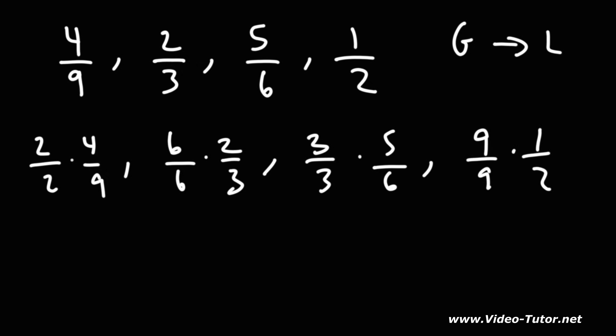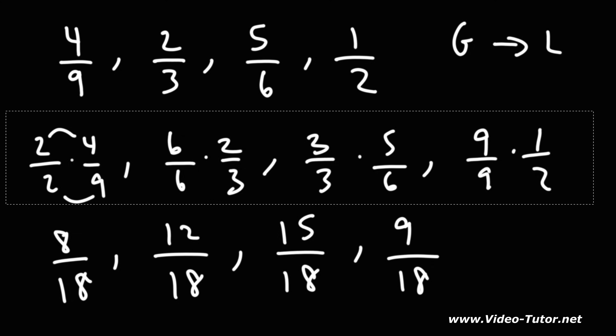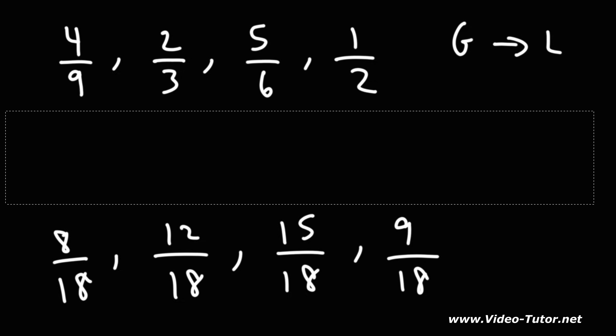So 2 times 4 is 8, 2 times 9 is 18. 6 times 2 is 12, 6 times 3 is 18. 3 times 5 is 15, 3 times 6 is 18. 9 times 1 is 9, 9 times 2 is 18.